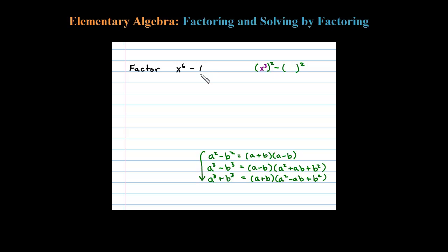Then you want to look at the second term here, one. What squared is 1? And that's just 1. So a is x to the third and b is 1. So factoring this using difference of squares, we'd be left with a plus b times a minus b.